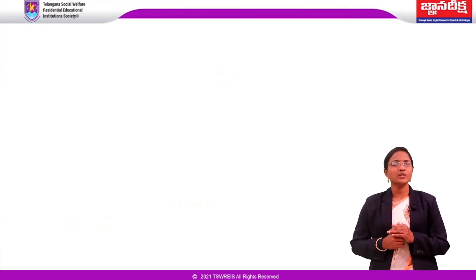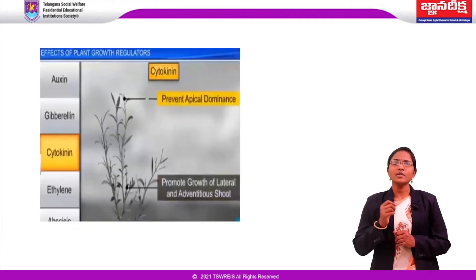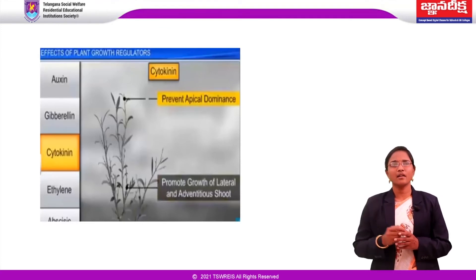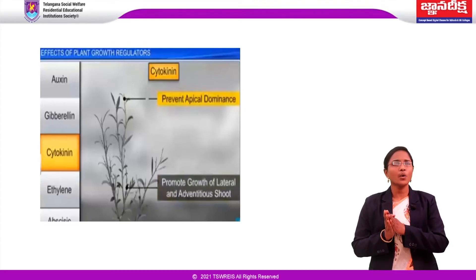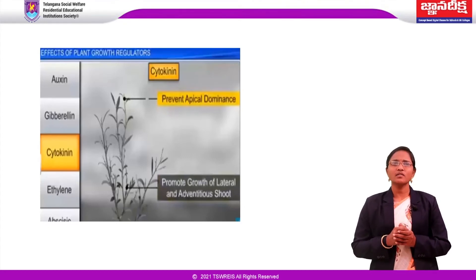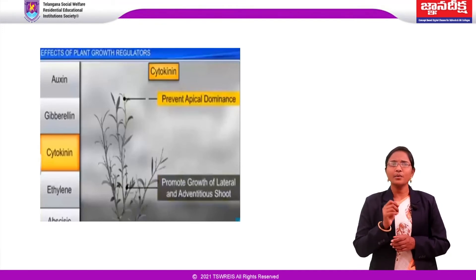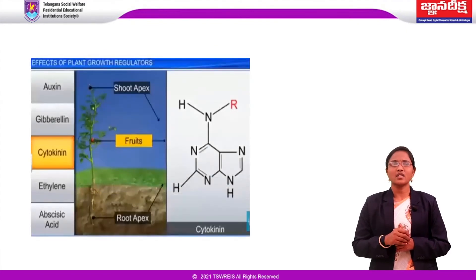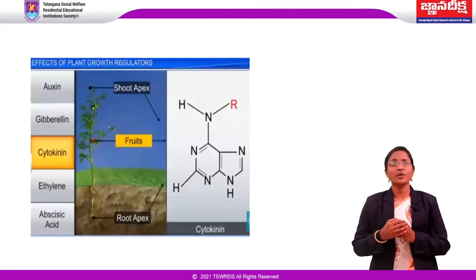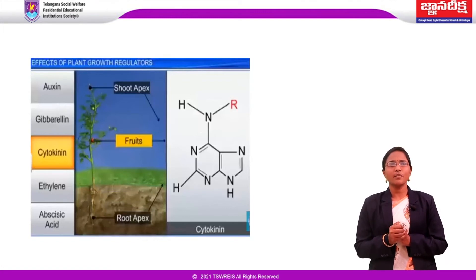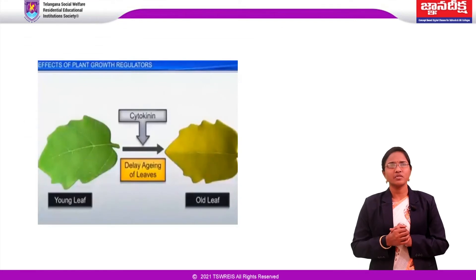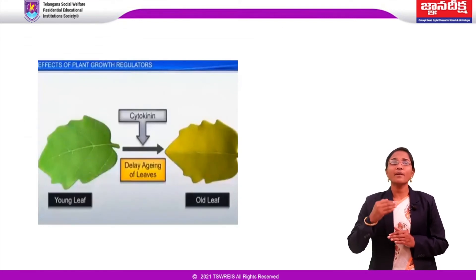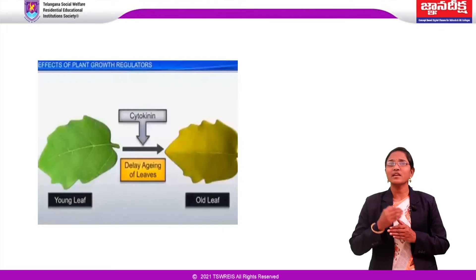Another phytohormone is cytokinin, discovered by Skoog and Miller. Kinetin is extracted from corn kernel and coconut milk. Natural cytokinins are synthesized in regions where rapid cell division occurs, such as root apices, developing shoot buds and young fruits. Cytokinins promote cell division and the formation of chloroplasts in leaves. They promote lateral shoot growth and adventitious shoot formation, help overcome apical dominance, and also promote nutrient mobilization which helps delay leaf senescence.